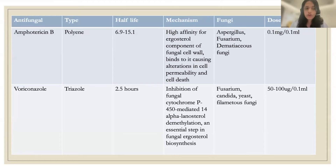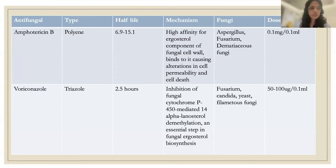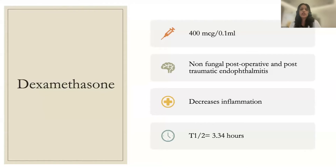For antifungals, amphotericin B has high affinity for the ergosterol component of the fungal cell wall, causing alterations in cell permeability and cell death. It is effective against Aspergillus, Fusarium, and dematiaceous fungi. Voriconazole inhibits fungal cytochrome P450-mediated 14-alpha-lanosterol demethylation, an essential step in fungal ergosterol synthesis, and acts against Fusarium, Candida, yeast, and filamentous fungi. Dexamethasone (400 mcg/0.1 ml) is added for severe inflammation in acute post-operative or post-traumatic endophthalmitis but should not be used in fungal endophthalmitis.